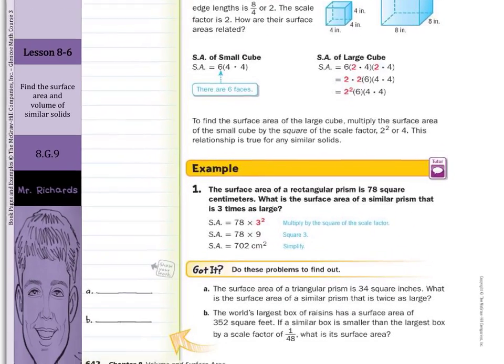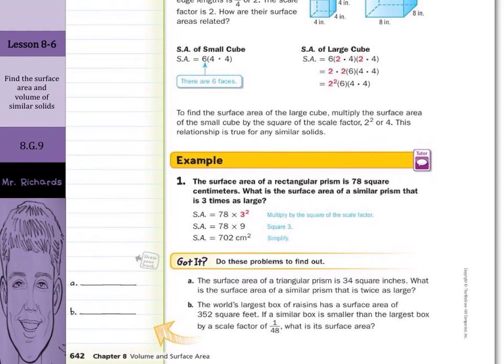So in our first guided example here, the surface area of a rectangular prism is 78 centimeters. What is the surface area of a similar prism that is 3 times as large? You're going to take that scale factor of 3 and square it to get 9 and multiply to get 702 centimeters squared.